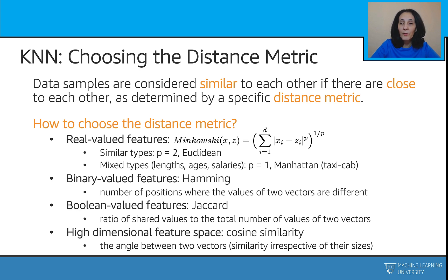For boolean vectors, the Jaccard distance returns the number of shared values divided by the total number of values in both vectors. For high-dimensional datasets where Euclidean distance is not very useful, cosine similarity is often preferred, as it is less affected by high dimensions — the angle between two vectors is not highly affected by the size of those vectors.